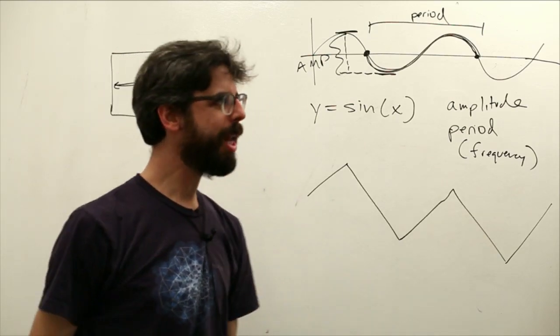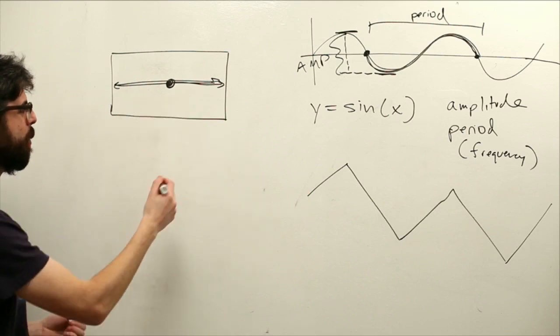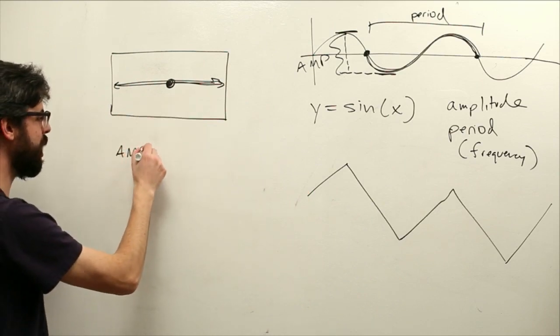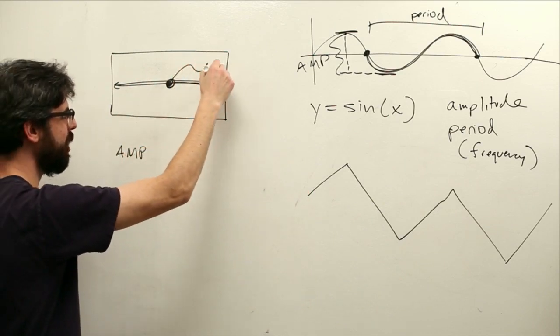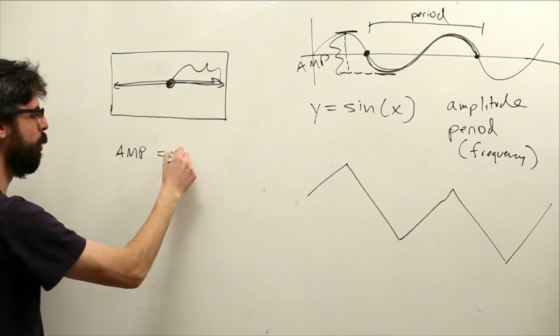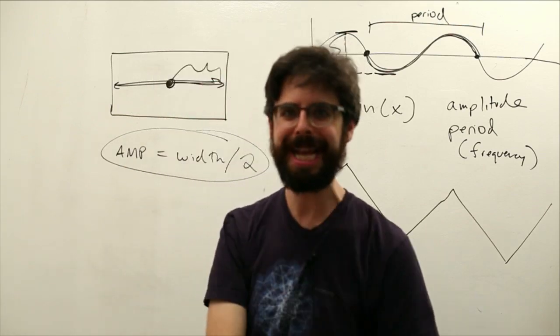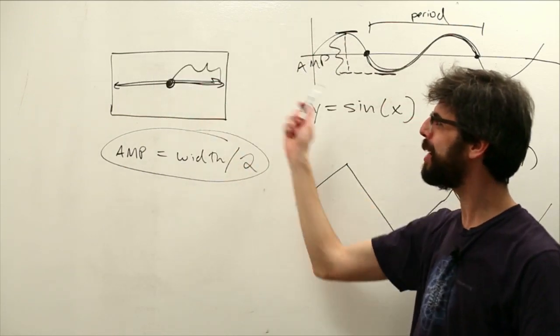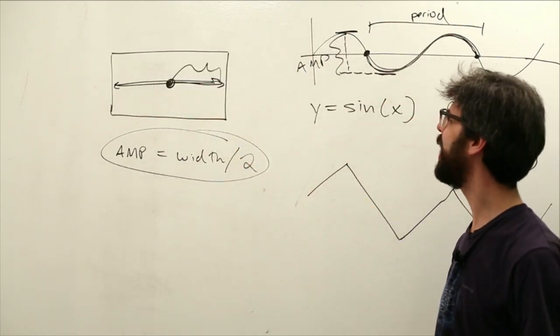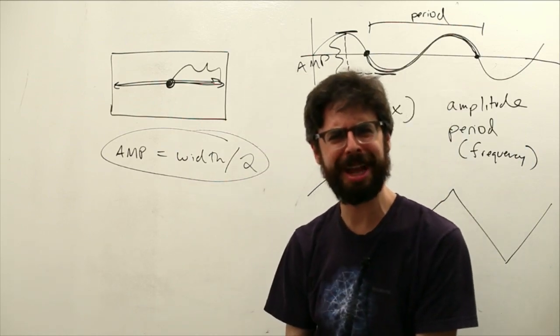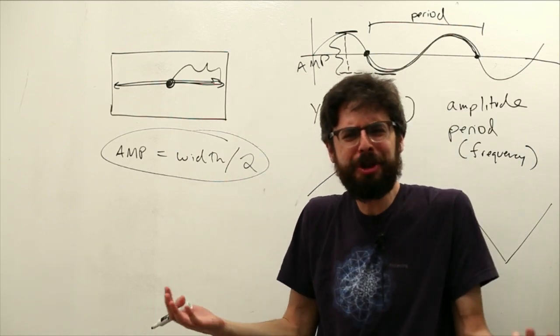So what is the amplitude of this oscillating motion? Well the amplitude we could think of as this distance from the center to the edge. We could think of that as width divided by 2. Excellent. What is the period?